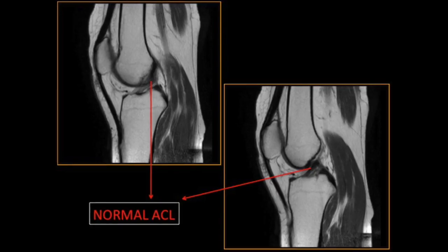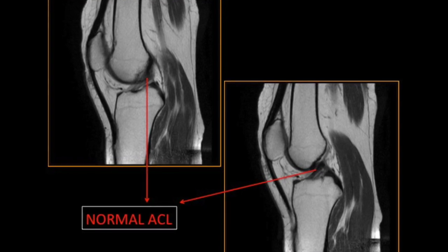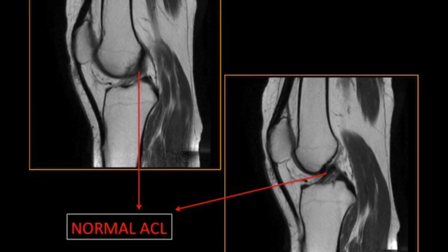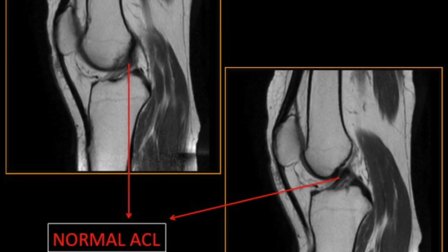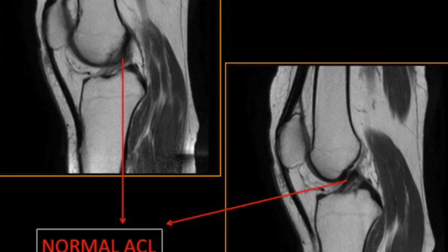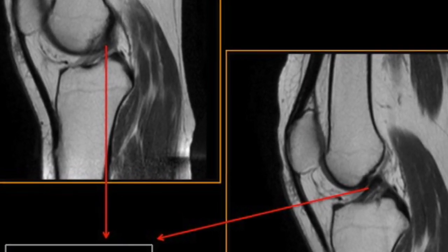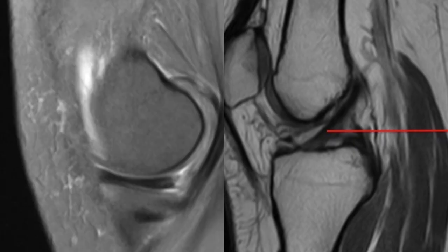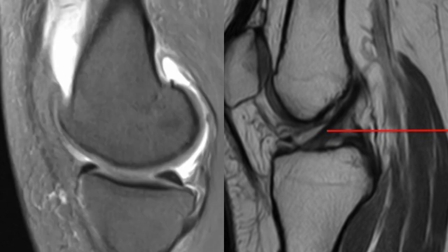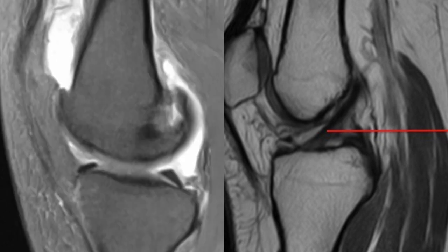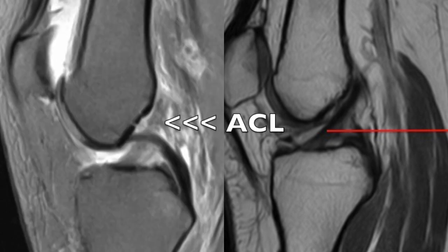Normally an ACL looks like a low band of signal intensity traversing from the femoral end to the tibial end, either seen totally in one single slice or in multiple slices depending on the obliquity of the scanning done.